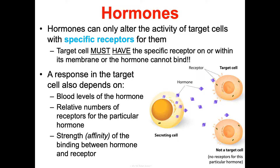Consistently low hormone levels can cause the target cell to make more receptors through up-regulation. Hormones also influence receptors for other hormones — for example, progesterone down-regulates estrogen receptors in the uterus, while estrogen can up-regulate progesterone receptors, enhancing the target cell's ability to respond to progesterone. There is significant interaction at the receptor level.